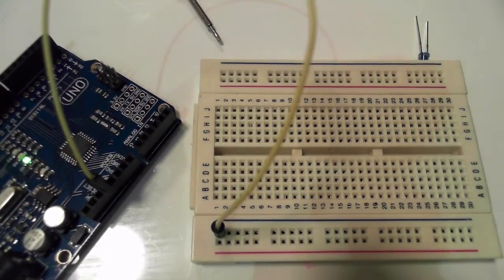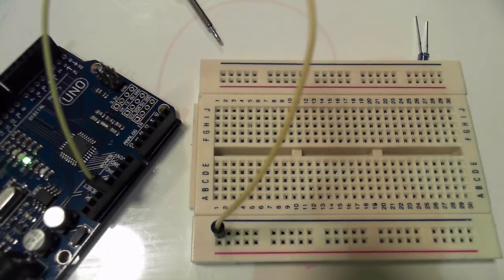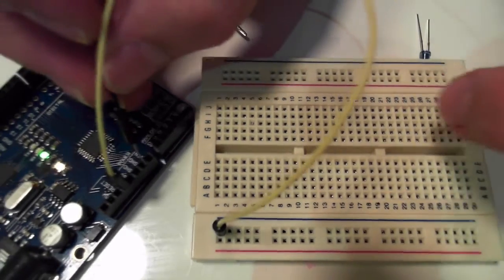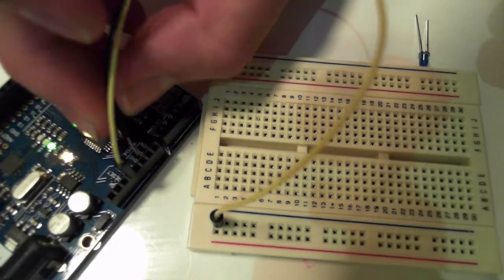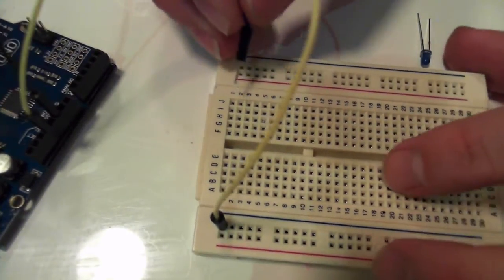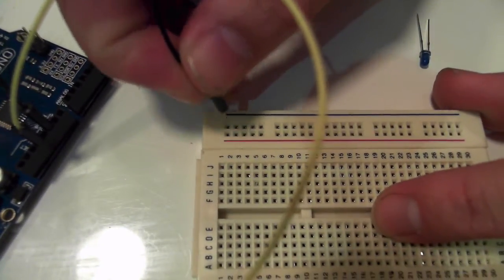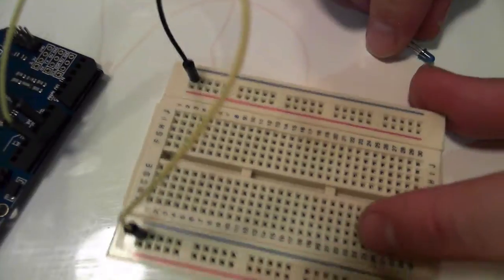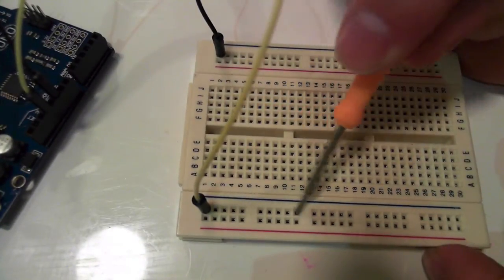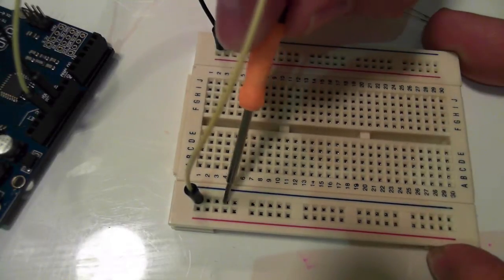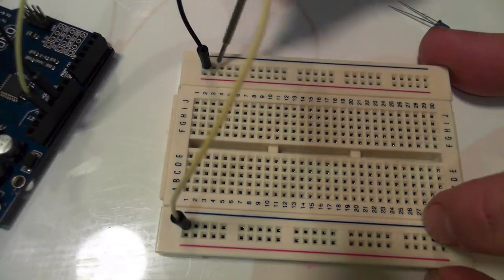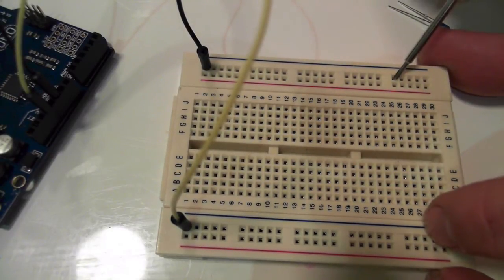Now, because we had the 3.3 volts going in, remember we have to put the ground in as well, so you can see it's a black one. So on my Arduino board, I'm going to plug in ground. And I'm going to do the same thing on the other side. So this is going to be all the way down here, my positive 3.3 volts, and all the way down here is going to be my negative, or my ground.